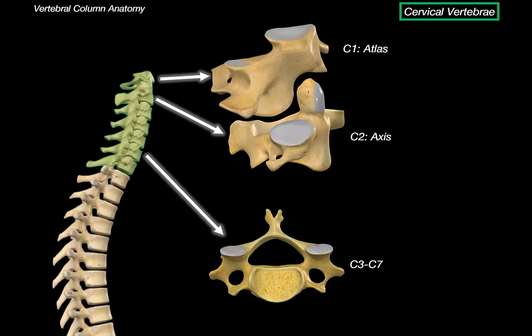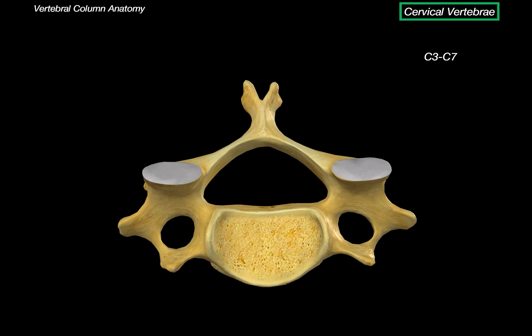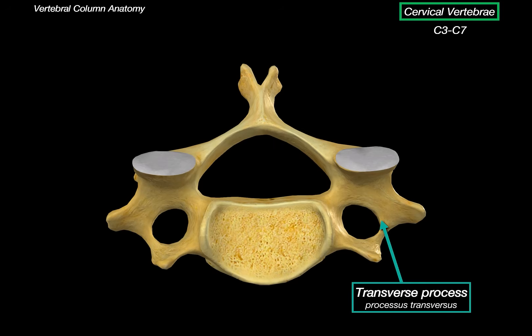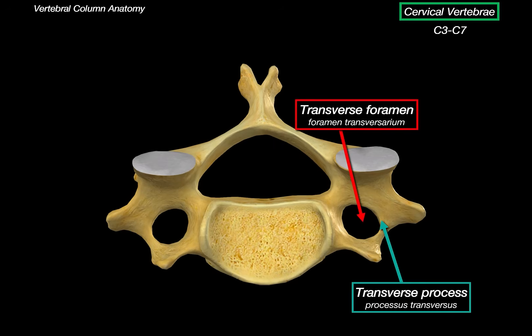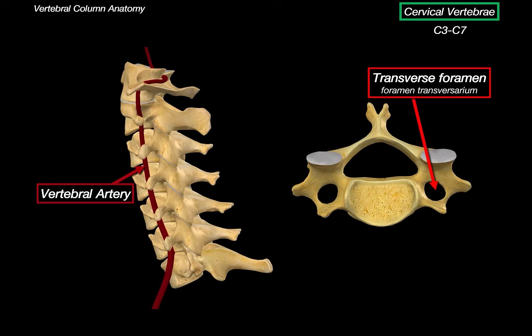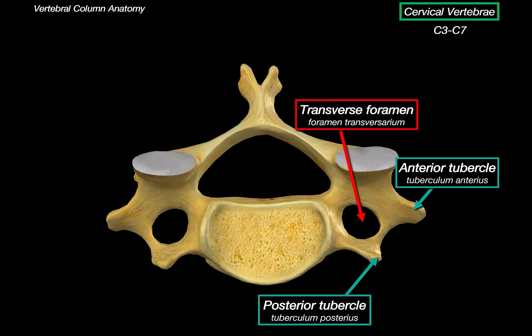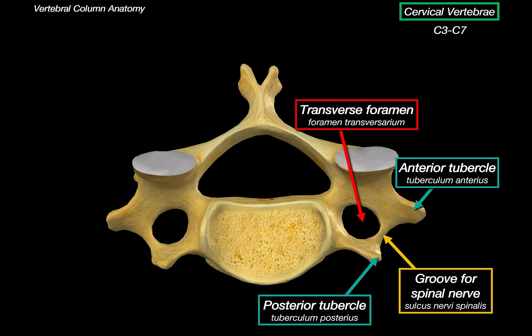If we look at the superior view of the normal cervical vertebrae, the first noticeable difference is that the transverse process contains an extra hole. This exists because the vertebral artery goes through it to supply the brain. On the transverse process of the sixth cervical vertebrae, there's an anterior tubercle specifically called the carotid tubercle. This one is prominent and palpable in the neck, and clinically it's important because the common carotid artery can be compressed against it to control bleeding or check the pulse. That's why it's called the carotid tubercle.